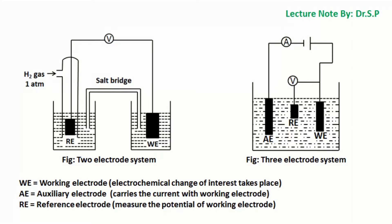The working electrode is the electrode in an electrochemical system on which the reaction of interest is occurring. The reference electrode is an electrode which has a stable and well-known electrode potential.